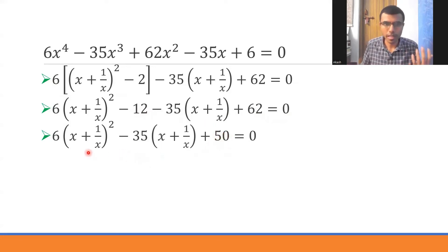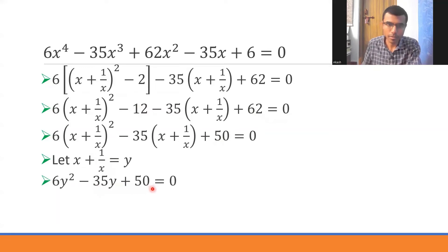Now what I'm going to do is take x + 1/x as another variable, equal to y. So this would be nothing but 6y² - 35y + 50 = 0.